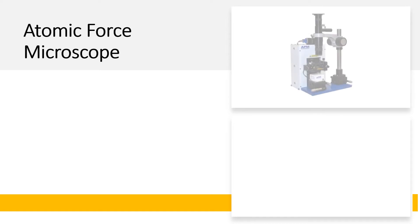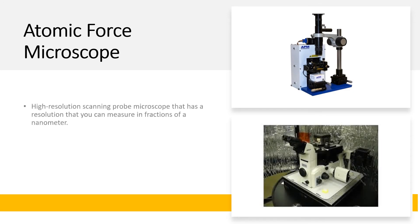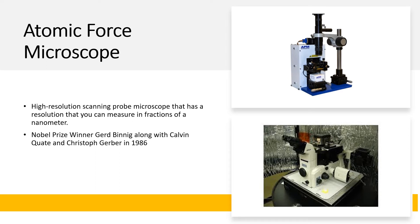Now let's move on to another microscopy technique called the atomic force microscope, or AFM. An atomic force microscope is a type of high-resolution scanning probe microscope with a resolution that can be measured in fractions of a nanometer. It was pioneered in 1986 by Nobel Prize winner Kurt Binnig, along with Calvin Quate and Christoph Gerber. Atomic force microscopy is arguably the most versatile and powerful microscopy technology for studying samples at the nanoscale. An AFM can not only image in three-dimensional topography, but can also provide various types of surface measurements to meet the needs of scientists and engineers. It can generate images at atomic resolution with angstrom-scale resolution height information with minimum sample preparation.